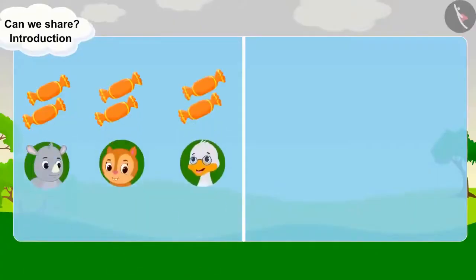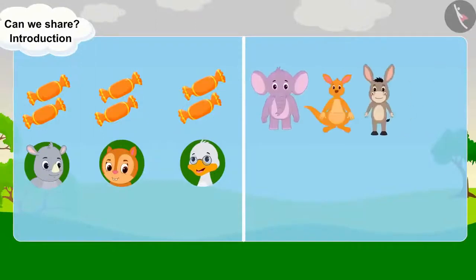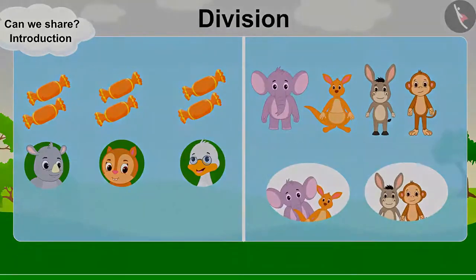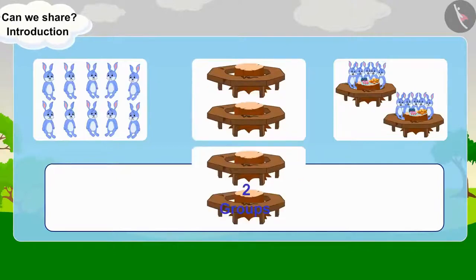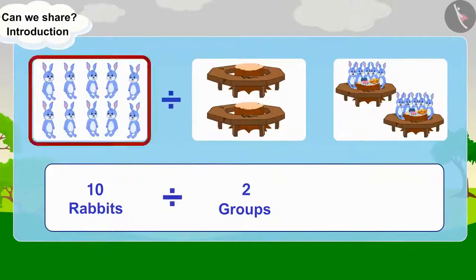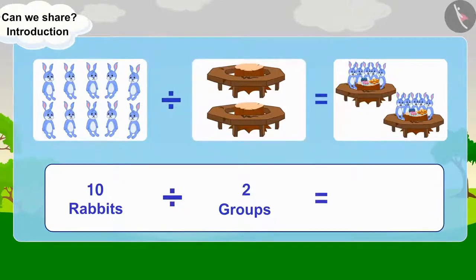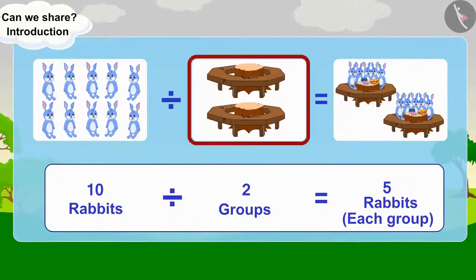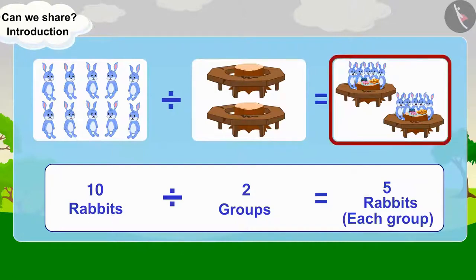Distributing things equally among people or making equal groups of people or things is called division. Here we are forming two equal groups of ten rabbits. Dividing ten rabbits into two equal groups gives five rabbits in each group. This is the total number of things to be divided, this is the symbol of division, this is the total number of groups, and this is the total number of things in each group.